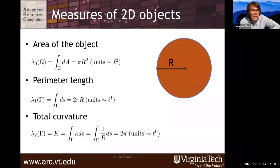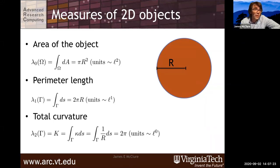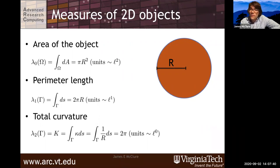To understand what these measures mean, we can start by considering a two-dimensional disc. In this case there are only three invariant measures, because a two-dimensional structure has one fewer measure than a three-dimensional structure. The first is the area of the disc, with units of length squared. The second invariant is the perimeter length, with units of length. And the third invariant is the total curvature — the integral of the curvature of the boundary — which has units of length to the power zero.